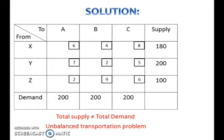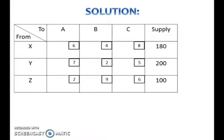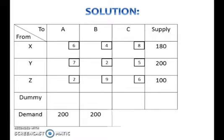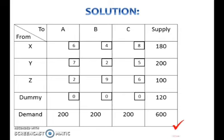Since here total supply is less than total demand, add a dummy row to the table. Write the shortage amount in the supply box and put zero transportation costs in each box in the body of the dummy row.